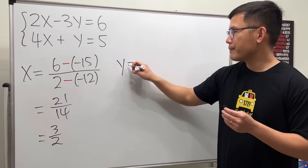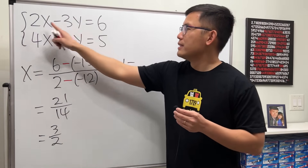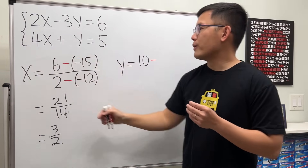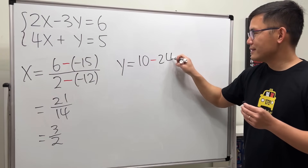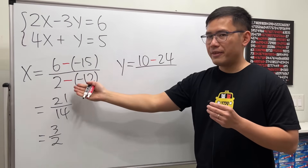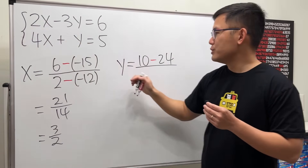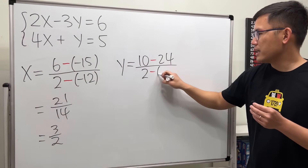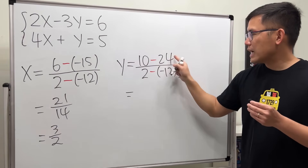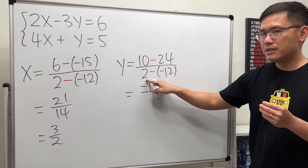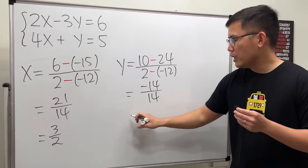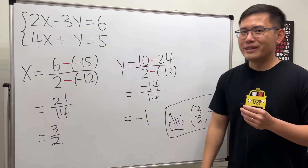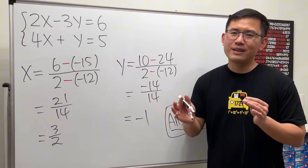For y, we are going to do 2 times 5 first, which is 10, and then minus 6 times 4, which is 24. Over the same denominator: 2 times 1 is 2, and then minus negative 3 times 4, which is negative 12. On the top we get negative 14. On the bottom this is 2 plus 12, which is positive 14. Reduced, we get negative 1. I'll definitely do more examples on this later on, but hopefully you find this video to be helpful.